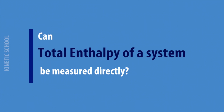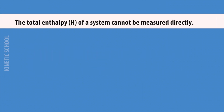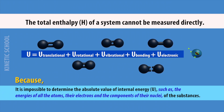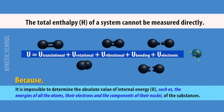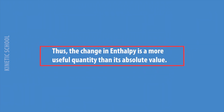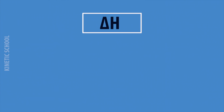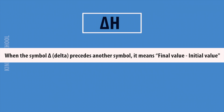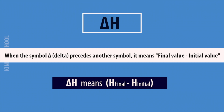Can the total enthalpy of a system be measured directly? The answer is no, because it is impossible to determine the absolute value of internal energy of substances. Thus, the change in enthalpy is a more useful quantity than its absolute value. The change in enthalpy is denoted by delta H, which means final enthalpy minus initial enthalpy.